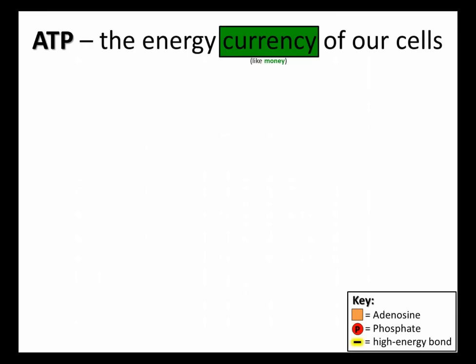Let's start by talking about ATP. ATP is the energy currency of our cells, and I think of currency like money. You want to buy stuff, you want to do stuff, you need ATP.